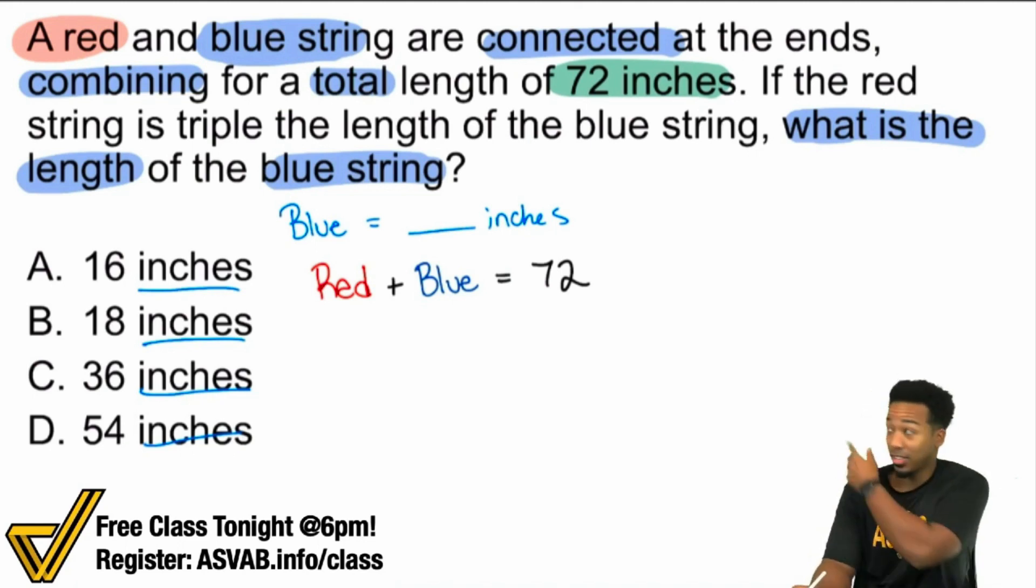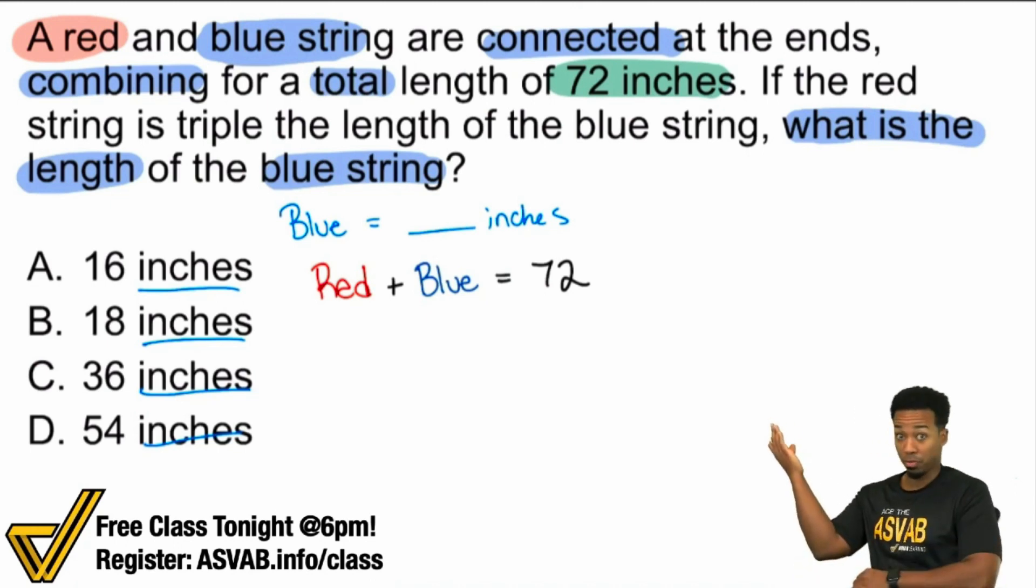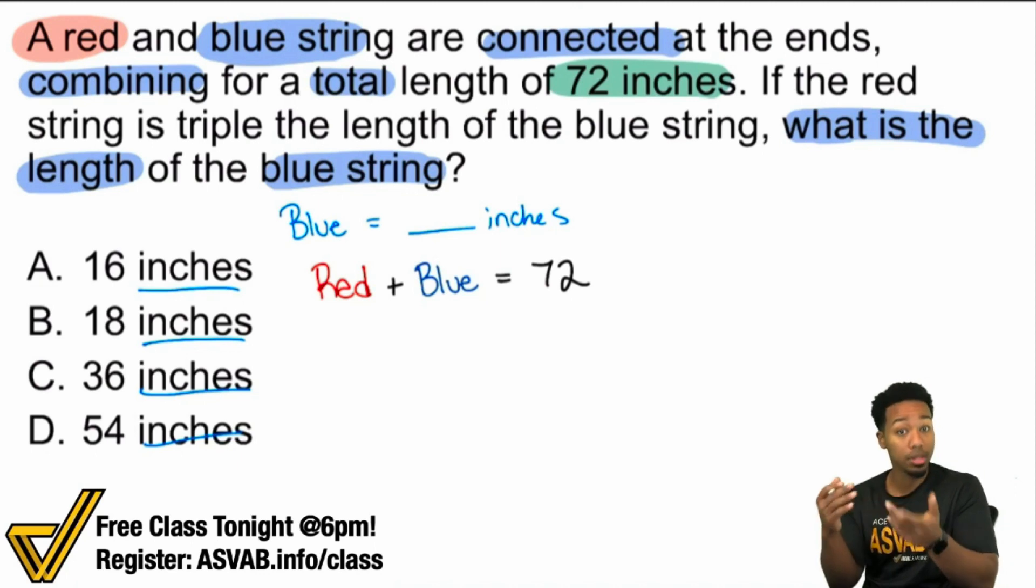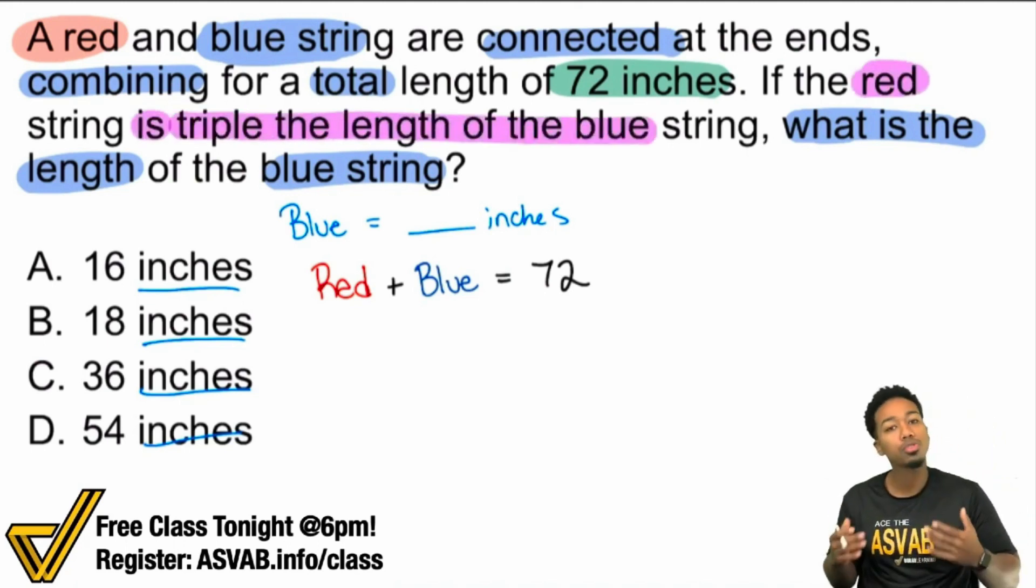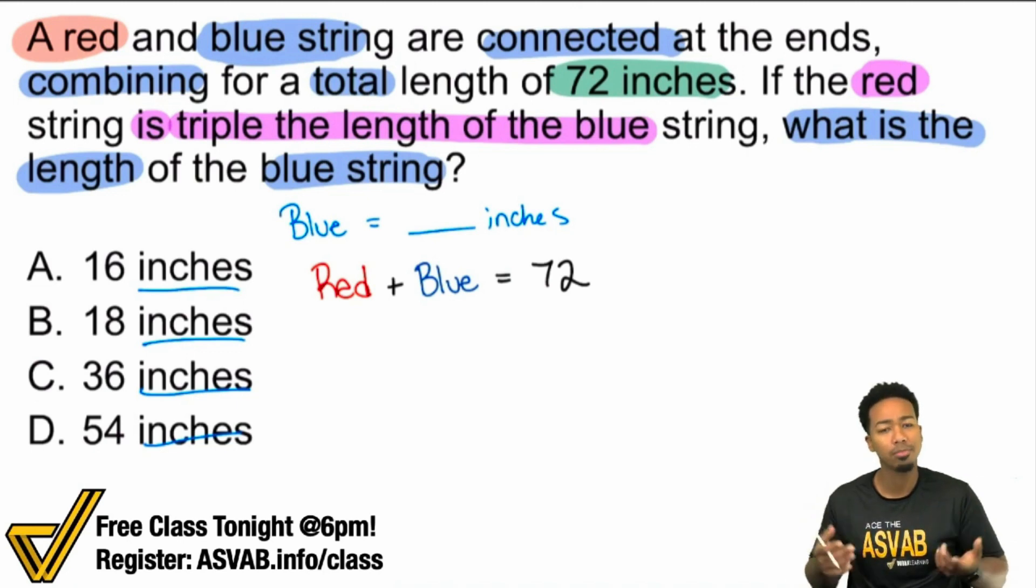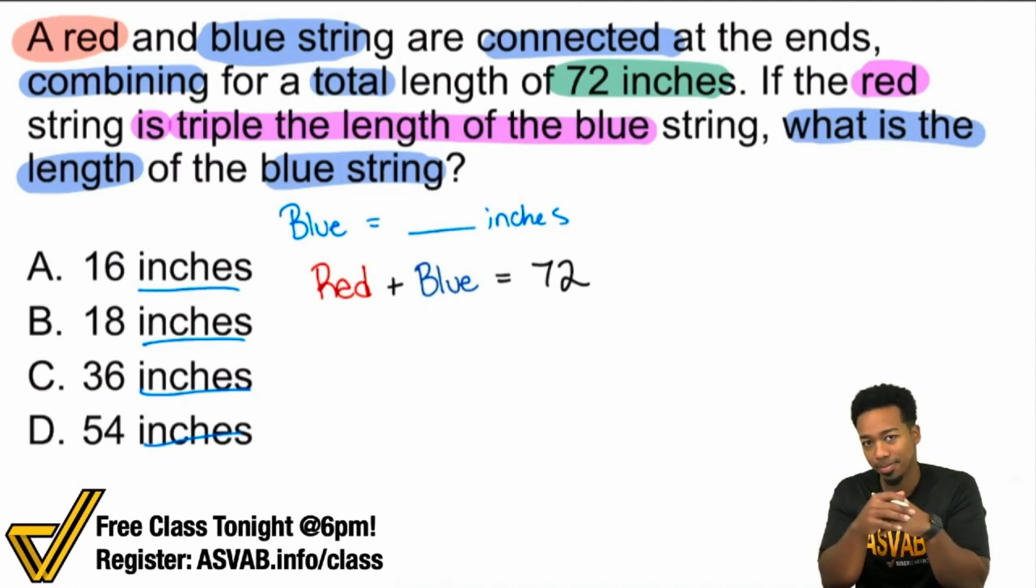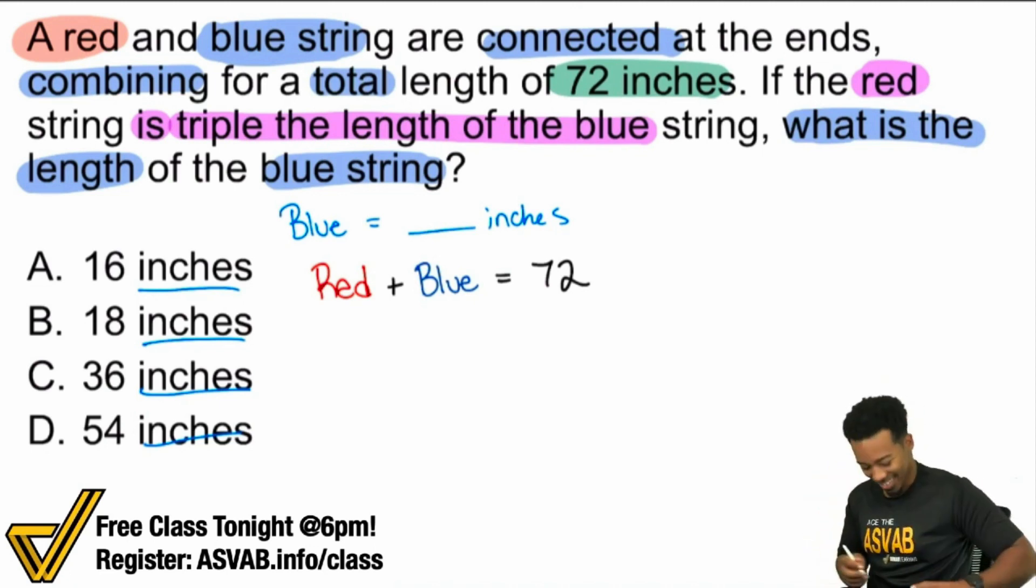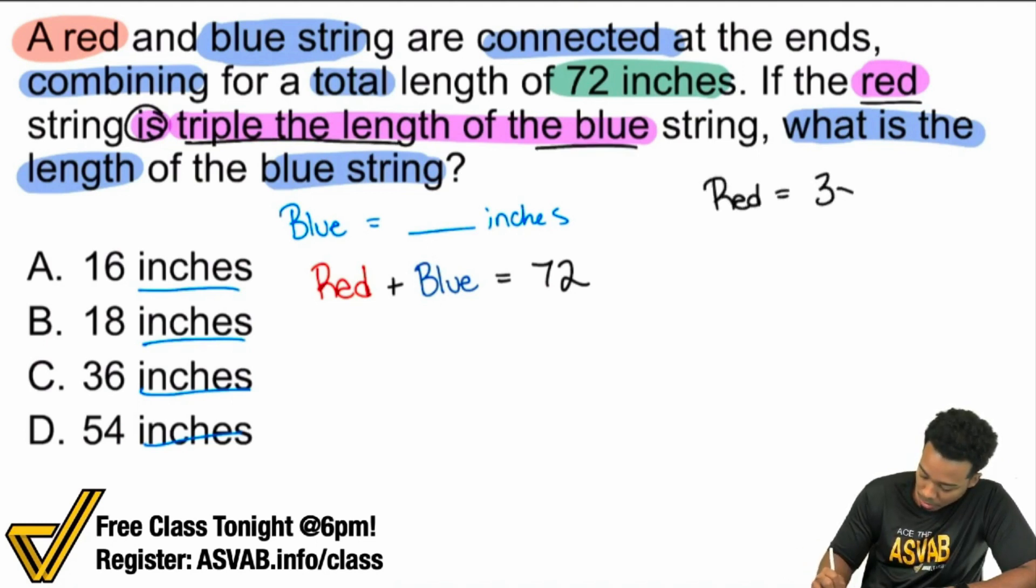Now, what we're going to do here is take red plus blue equals 72. But first, we need to finish taking in our information. We're going to show you how to translate just red plus blue equals 72 to actual math we can use. Watch. So up next, what we read here is that red is triple the length of blue. So the red string is triple the length of blue. What does triple mean? Times three. Triple means times three. We got to multiply by three here because we see here that it says red is triple the length of blue. So we know that red equals three times blue.